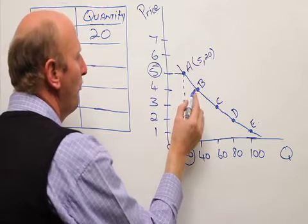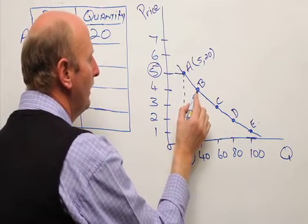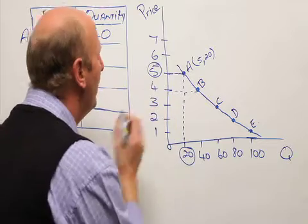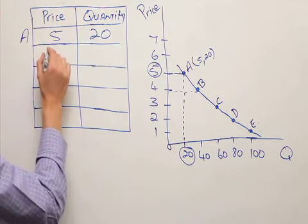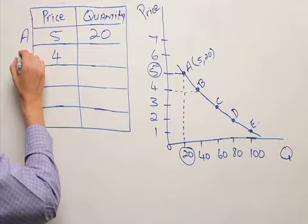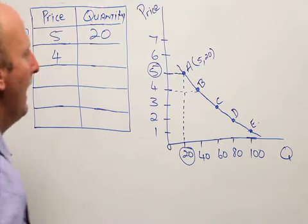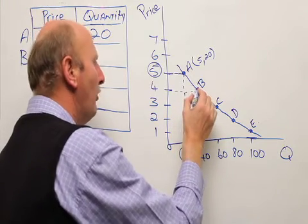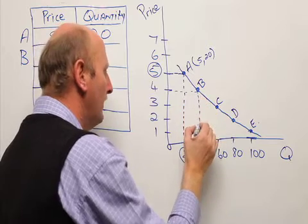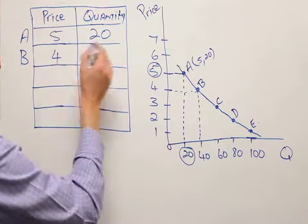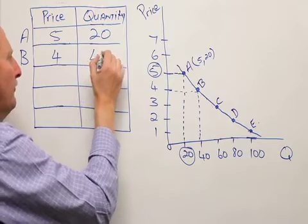I continue for point B. So at point B, I draw once again a line across. And there you will find it meets the price axis at a value of 4 grand. And then, at point B, downwards to the quantity. And the quantity that corresponds with the price of 4 grand is 40.